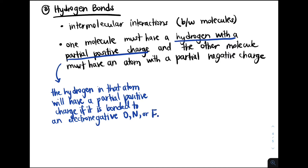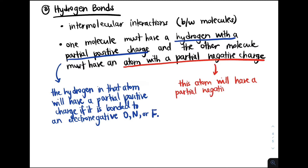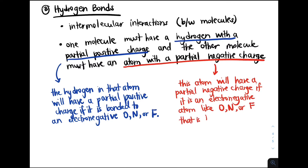Let's think about why this is true. If a hydrogen atom is bonded to a more electronegative atom, then the highly electronegative atom — like oxygen or nitrogen — is going to pull the hydrogen's electrons away from it. Because of this, the oxygen or nitrogen becomes partially negatively charged, and the hydrogen has a partial positive charge because its electron was pulled away. We can get an atom with a partial negative charge in the other molecule if it is a highly electronegative atom like oxygen, nitrogen, or fluorine bonded to a less electronegative atom like hydrogen or carbon.